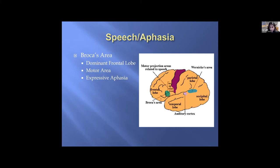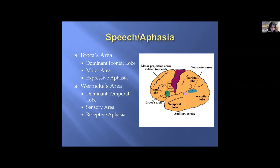This is called expressive aphasia — the patient has difficulty speaking. Wernicke's area is in the dominant temporal lobe and controls sensation. A tumor there would cause receptive aphasia, where a patient has difficulty understanding what someone is telling them.